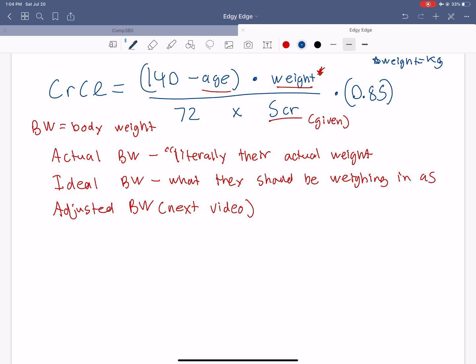So ideal body weight is, depending on male or female, depending on gender. So for males, the formula for ideal body weight, abbreviated IBW, is equal to 50 plus 2.3 times inches over 5 feet, as in their height. So for females, ideal body weight is equal to 45.5 plus 2.3 times inches over 5 feet.